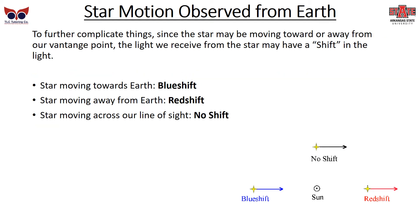To further complicate things, since a star may be moving toward or away from our vantage point, the light we receive from that star may have a shift. If the star is moving toward Earth, we see a blue shift — it starts shifting toward the blue side of the visible light spectrum. If it's moving away from Earth, it's called a red shift. And if it's moving across our line of sight rather than at us, we see the light as it is — there's no shift at all. But this is how we can tell the relative speeds and velocities of objects that we observe.